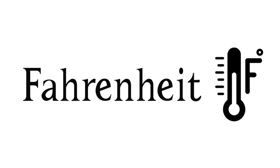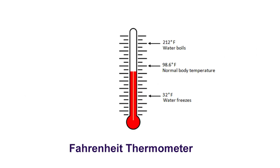On the other hand, the Fahrenheit scale, proposed by Daniel Gabriel Fahrenheit in 1724, is primarily used in the United States and a few other countries. Unlike the Celsius scale, the freezing point of water in the Fahrenheit system is set at 32 degrees.